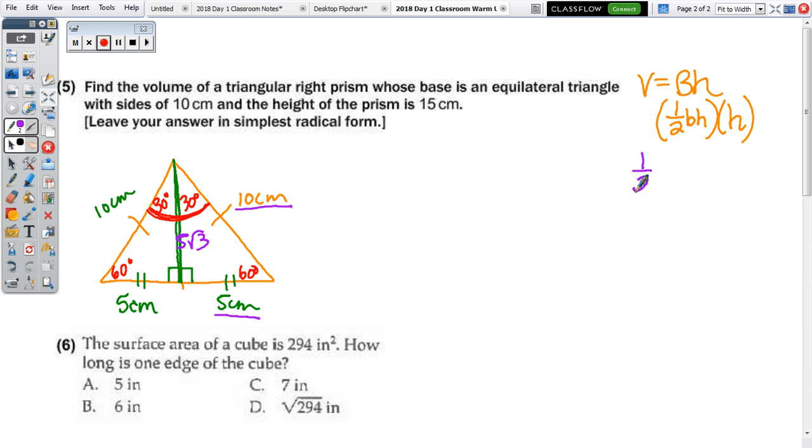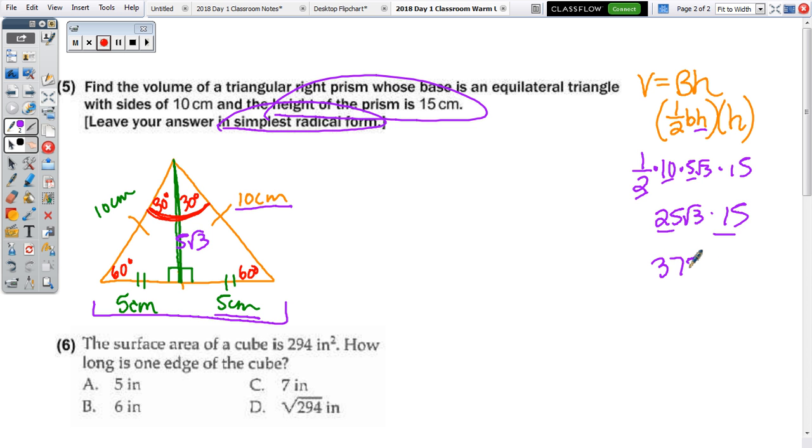So over here, the volume is going to be one-half base, the base of our triangle is five plus five, or 10. So one-half times 10 times, again, this height is the height of the triangle, which is five radical three, and then times the height of the prism, 15. So half of 10 is five times five, so 25 radical three times 15. And since it didn't say to round, and it said to leave your answer in simplest radical form, we just multiply the 25 times the 15 to get 375 radical three cubic centimeters.